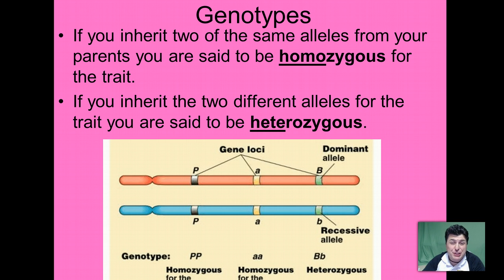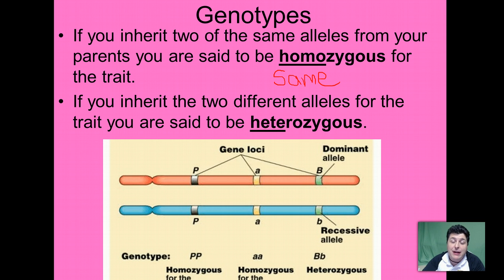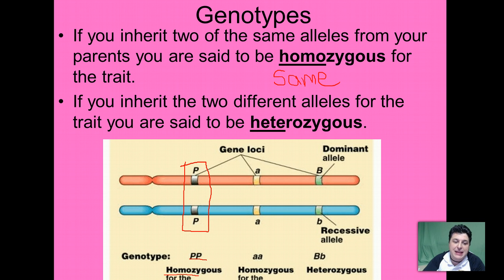There are at least three different gene combinations — three different genotypes — that we can inherit from our parents. If you inherit two of the same alleles from your parents, you are said to be homozygous; the prefix homo means same. Looking at our example homologous chromosomes, if an individual has inherited a dominant allele from its mother and a dominant allele from its father, we say they are homozygous dominant for that trait. Similarly, if they've inherited two recessive alleles — one from their mother and one from their father — we describe them as homozygous recessive.